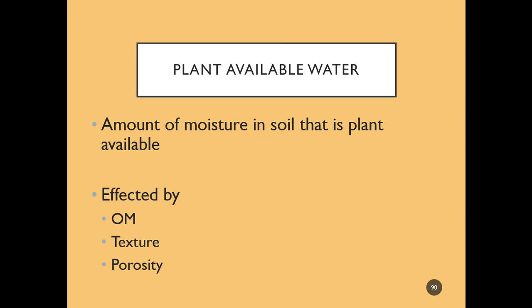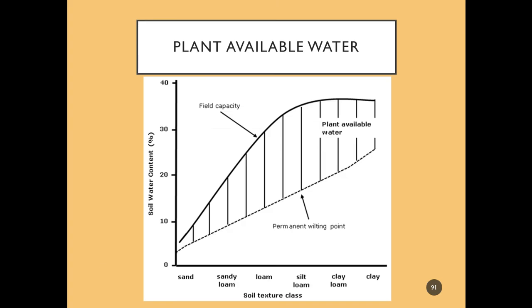It can be affected by organic matter, the soil texture, and then the porosity of the soil as well. An easy way to conceptualize this is with this graph. All these numbers are estimates — these aren't hard and true numbers — but it gives us an idea of where our plant available water exists. On the top line here, this solid line is our field capacity. This is the amount of moisture in the soil 24 hours after it's been saturated.